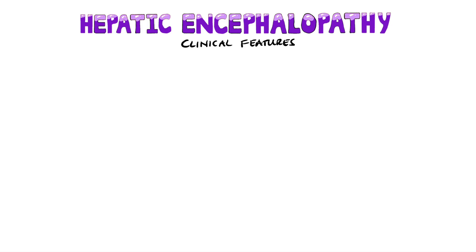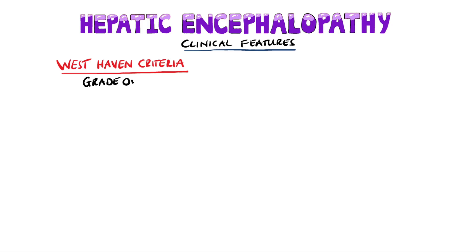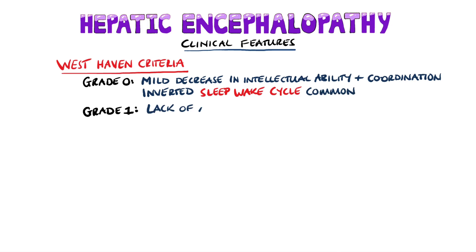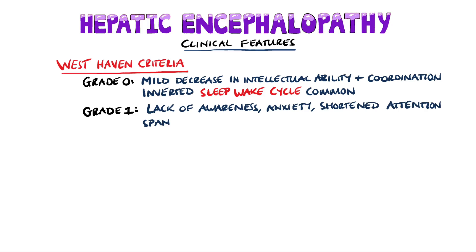Hepatic encephalopathy has different stages. According to the West Haven criteria, stage 0 is where there are no obvious changes, only a mild decrease in intellectual ability and coordination. One of the first changes noticed is an inverted sleep-wake cycle. Stage 1 means patients have a lack of awareness, are often anxious, and have a shortened attention span, typically with impairments in addition or subtraction.